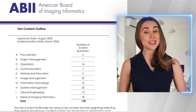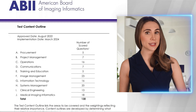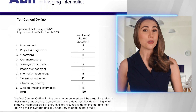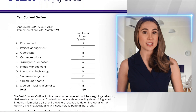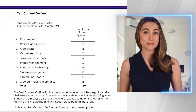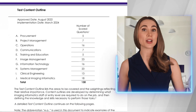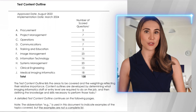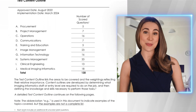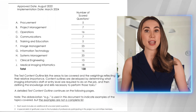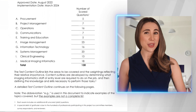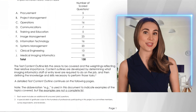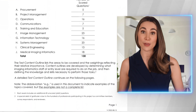First, the number of questions on the exam has increased. While the number of scored questions remains at 130, the total number of questions has jumped to 170. Why? Because there are now more unscored pilot questions — 40 in total, up from 30 in the 2020 exam. These questions are designed to test new materials, so even though they won't count towards your score, they're a clear signal that the exam is continuously evolving to stay relevant.